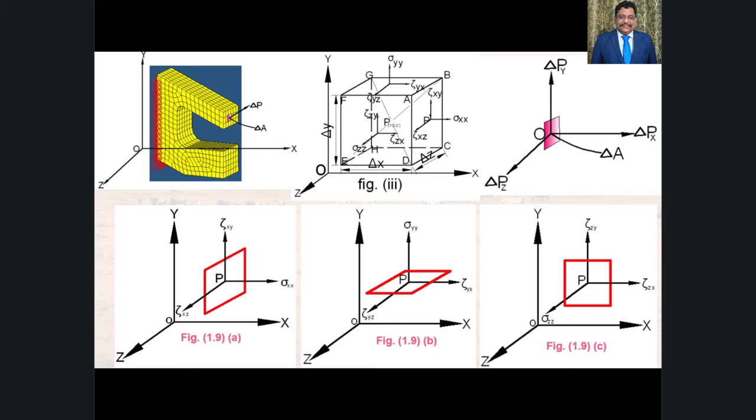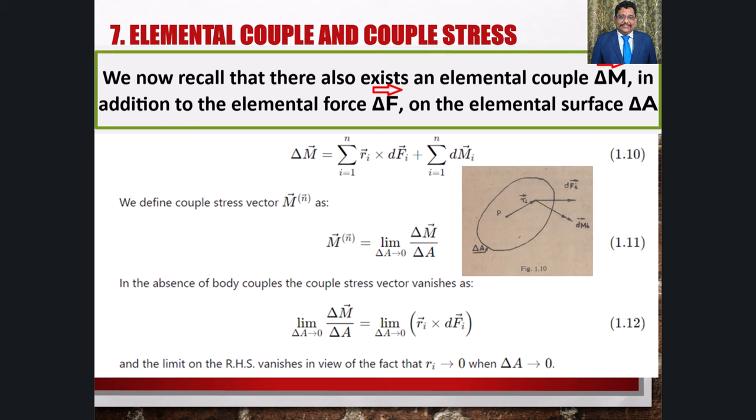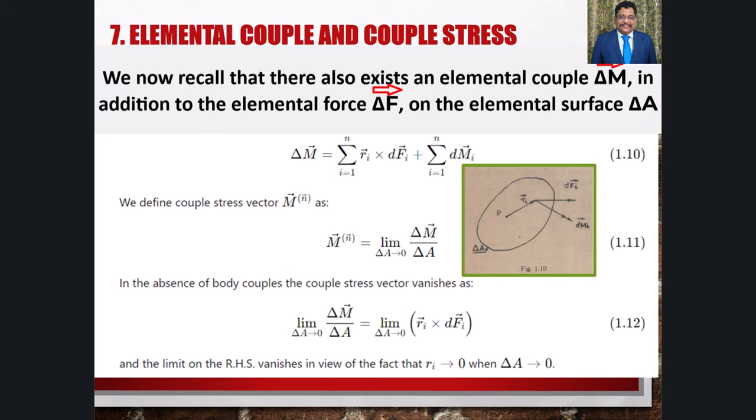इस stage पर हम ये महसूस कर सकते हैं कि stressed body के किसी भी point के through surface elements की अनगिनत orientations संभव हैं और इसलिए उस point पर countless stress components हो सकते हैं। हालांकि किसी दिए गए set of axes के respect में केवल nine stress components की आवश्यकता होती है ताकि उस point पर stress state को पूरी तरह से specify किया जा सके। Elemental surface delta A पर elemental force delta F के अलावा एक elemental couple delta M भी मौजूद होता है।